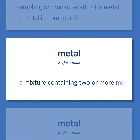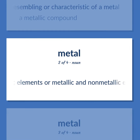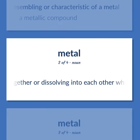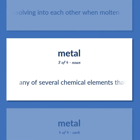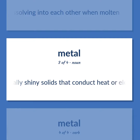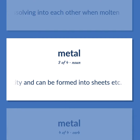A mixture containing two or more metallic elements, or metallic and non-metallic elements, usually fused together or dissolving into each other when molten. Any of several chemical elements that are usually shiny solids, that conduct heat or electricity, and can be formed into sheets, etc.